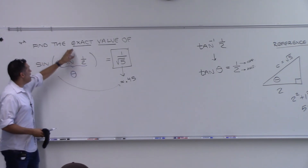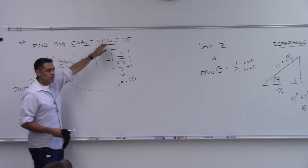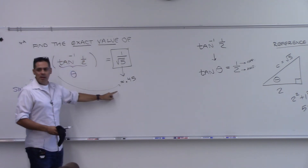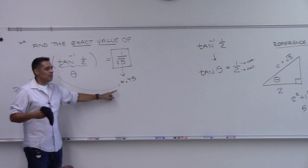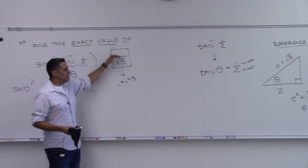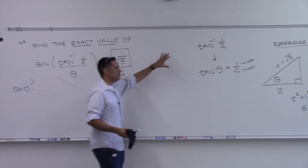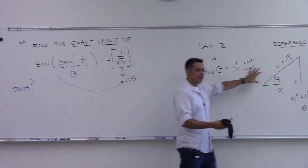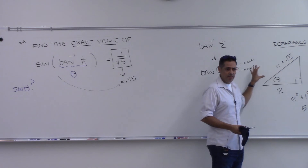On an exam, if I ask you for the exact value and you give me 0.45 because you typed it into your calculator, you're not going to get any credit. You need the reference triangle to get the exact answer.